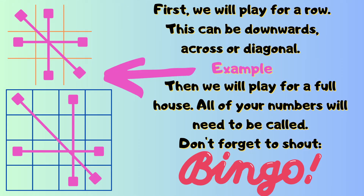First we're going to play for a row, and this can be downwards, across or diagonal. Then we're going to carry on playing for a full house. This is where all of your numbers will need to be called. So don't forget to shout out Bingo!